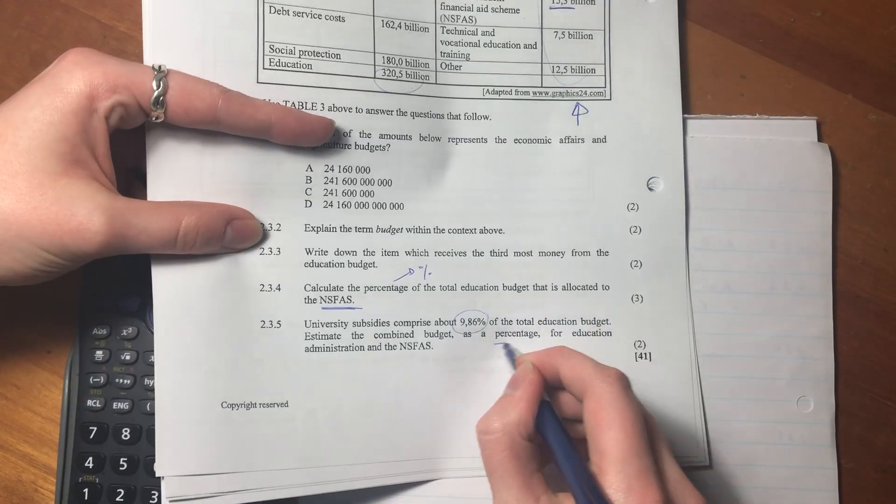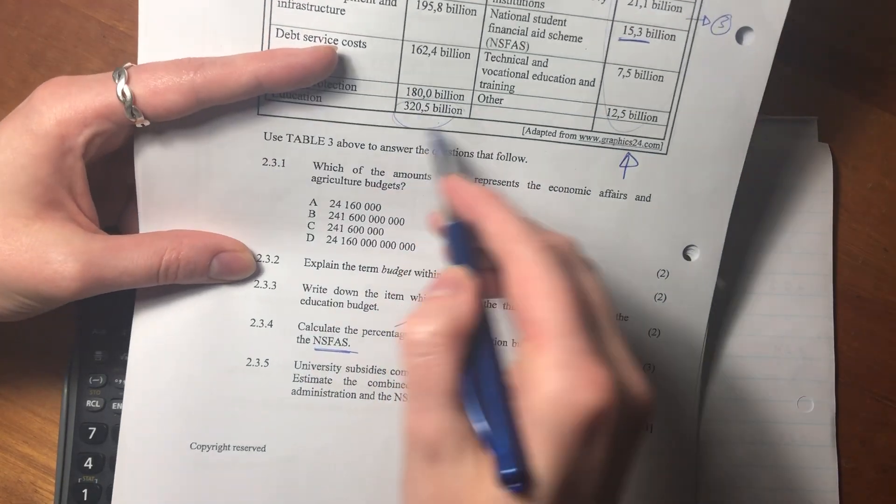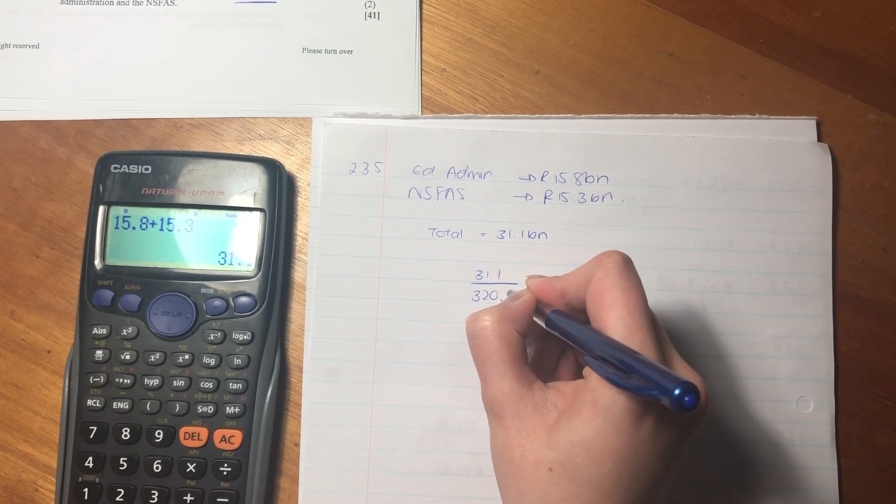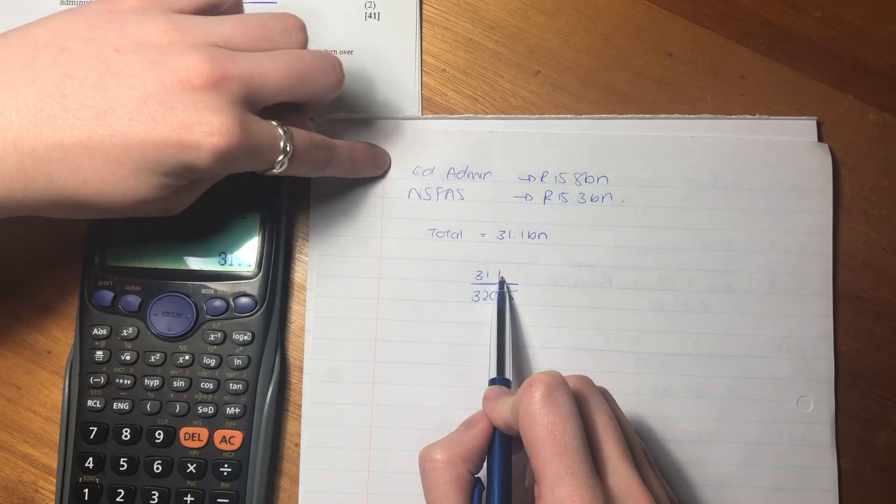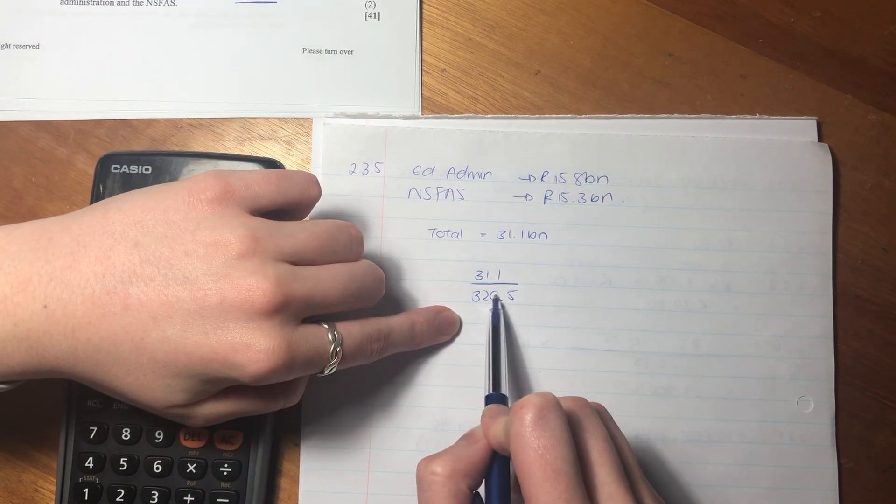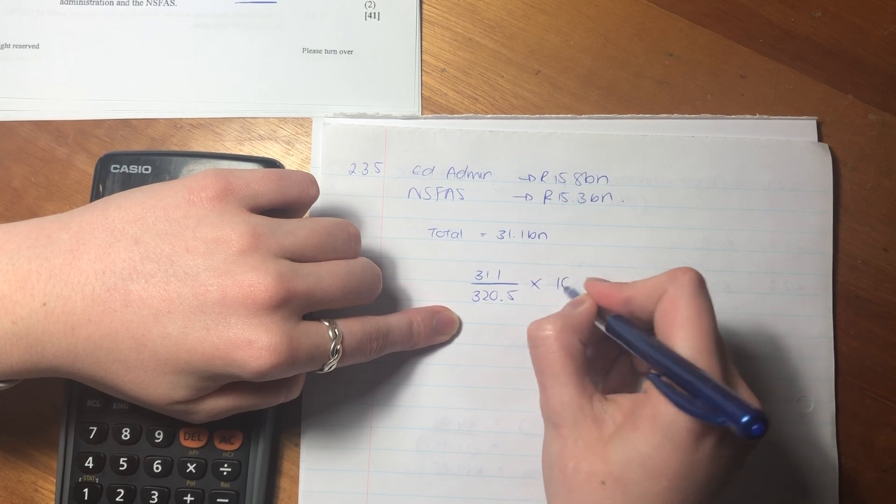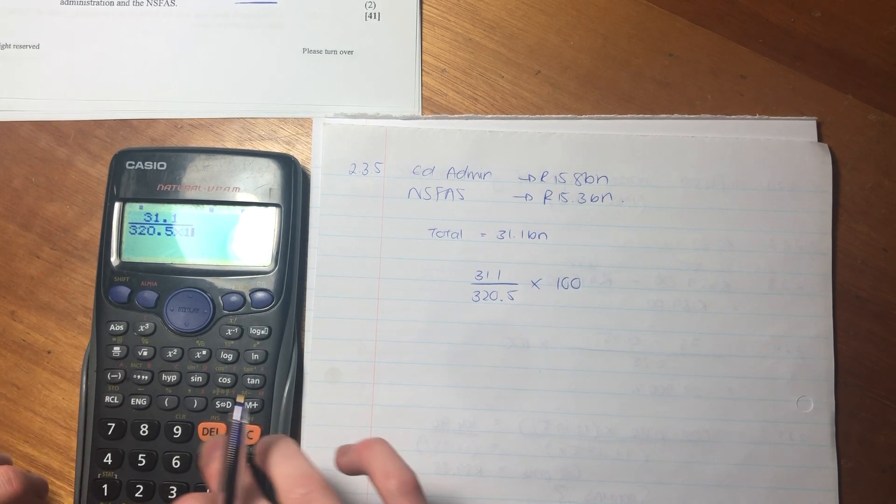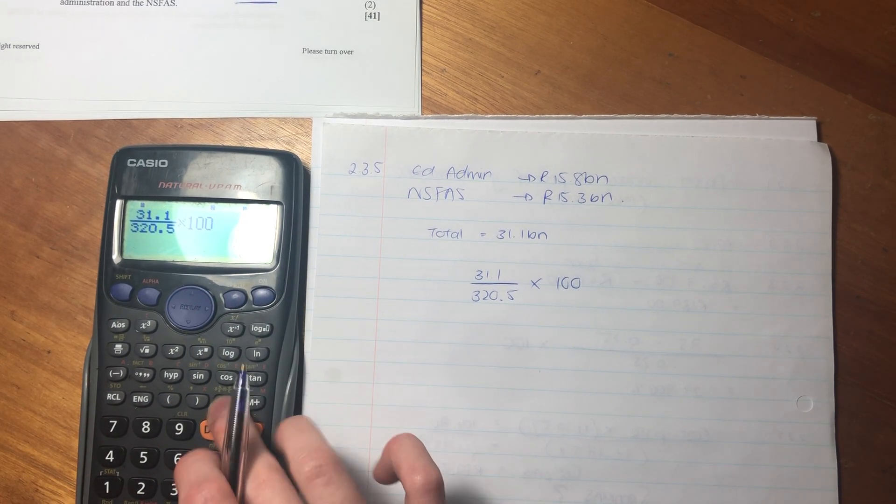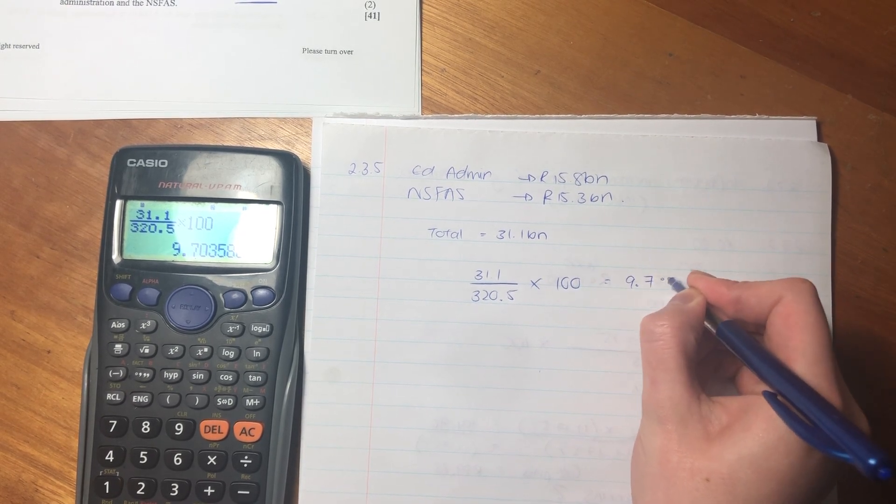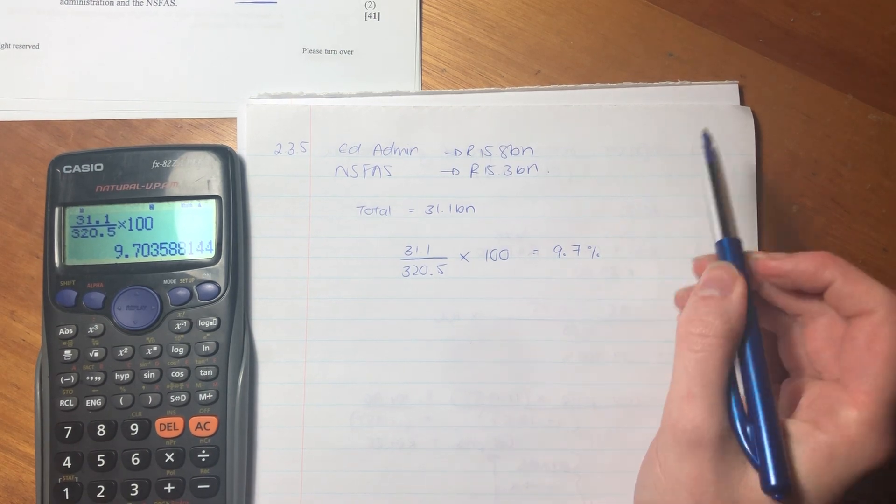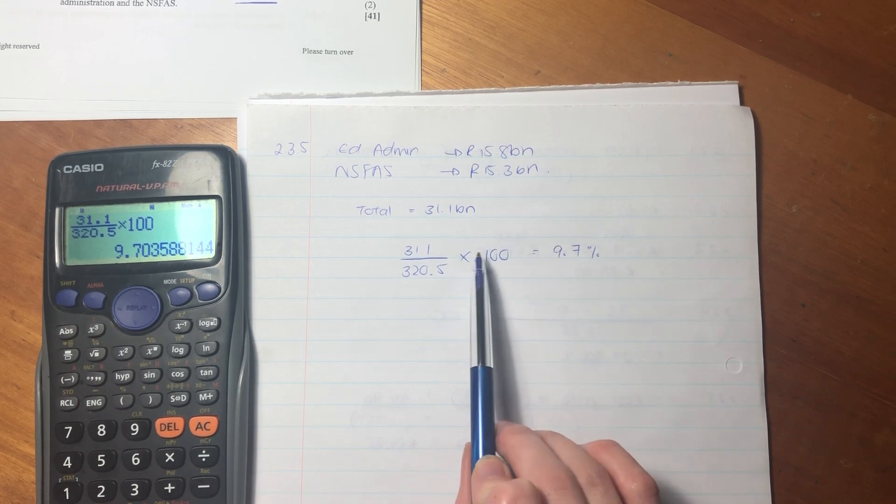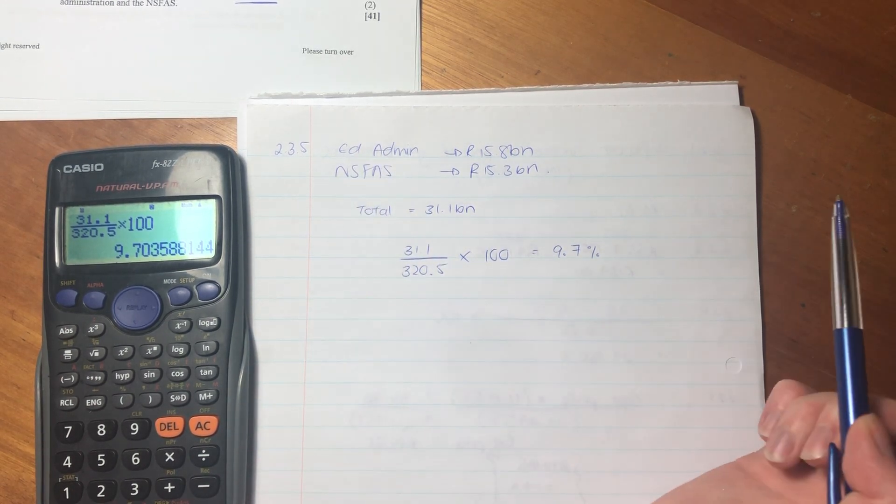But the question asks us as a percentage of the education budget, so we're doing a similar calculation to what we did in the previous question. We'll be saying the amount that we're talking about, which is Ed Admin and NASFAS, we are going to put it over the total education budget times by 100. Put that into our calculator, make sure you type it in correctly. And it is 9.7%. So you see here that the university subsidies is more than the combined allocation for Ed Admin and NASFAS.